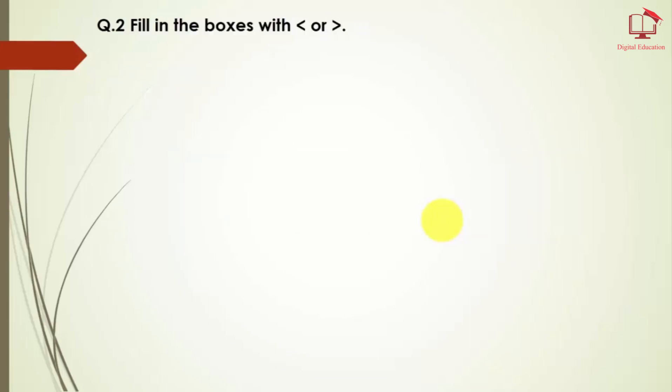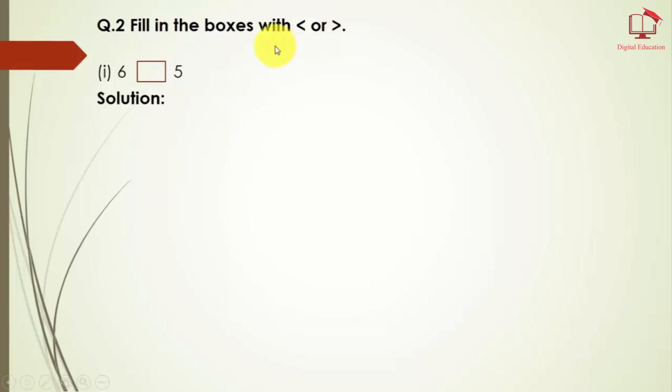Now let's move forward to question number 2. Here we have a question where we need to fill a box with a less than or greater than symbol — these are relational operators. For question number 2, part 1, we have to write which number is greater and represent it with these notations. You can see here: 6 is greater, so we assign the greater than sign — 6 greater than 5.